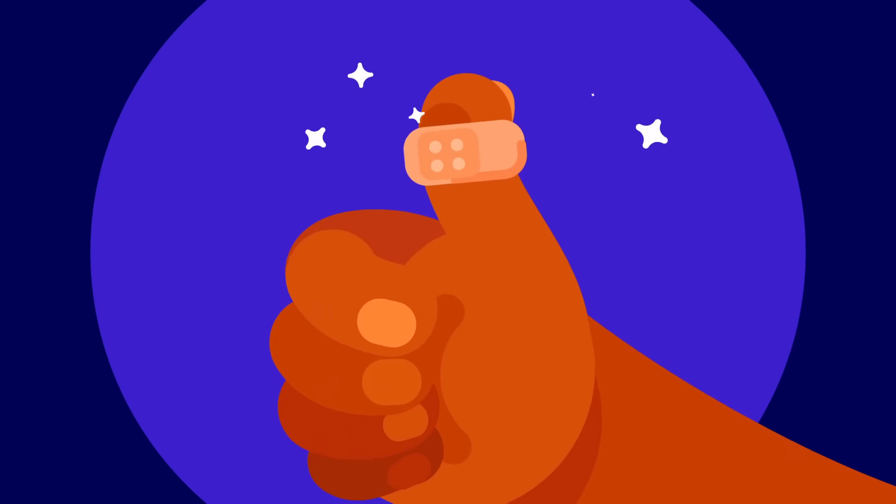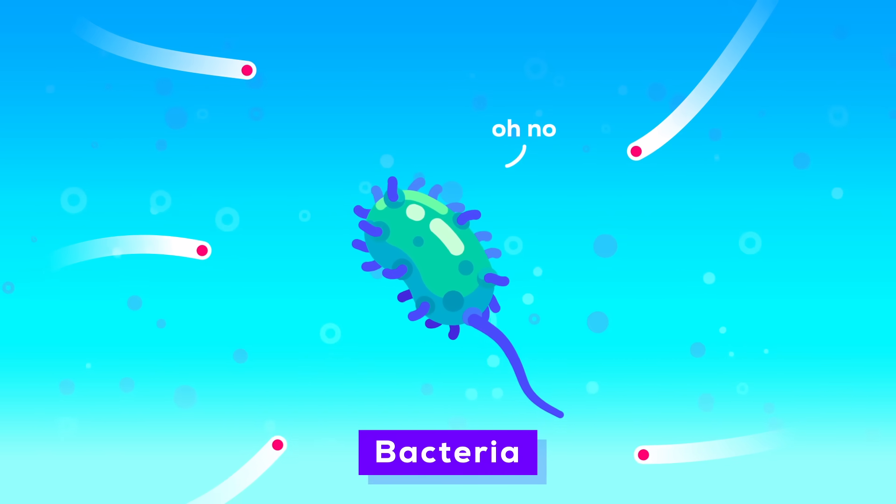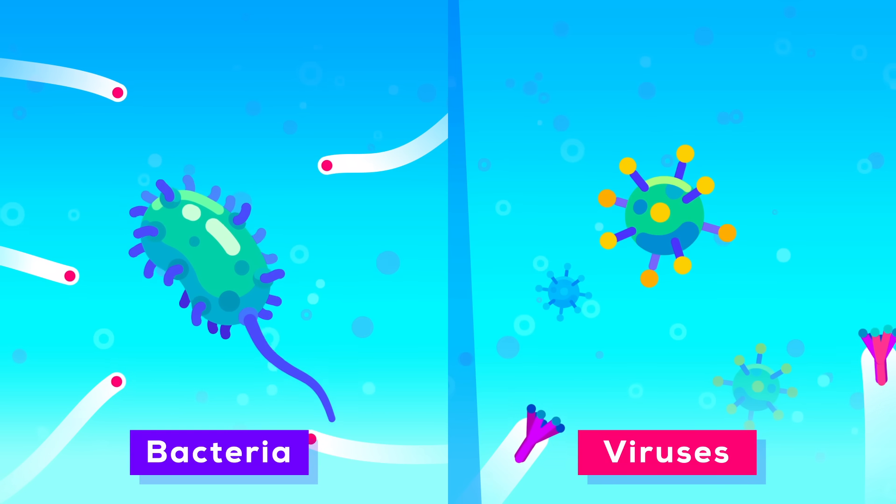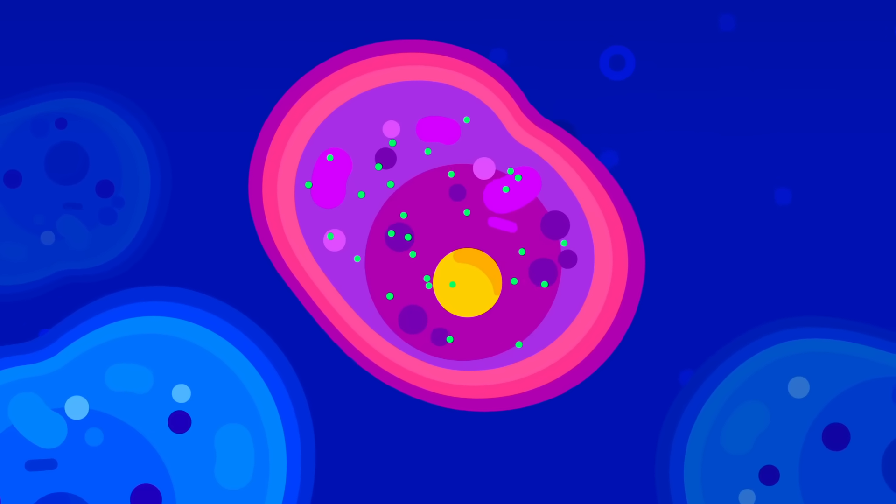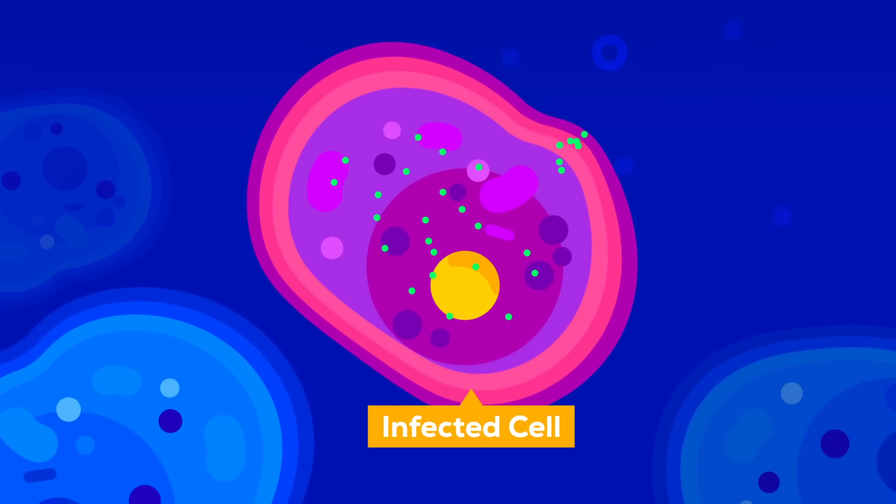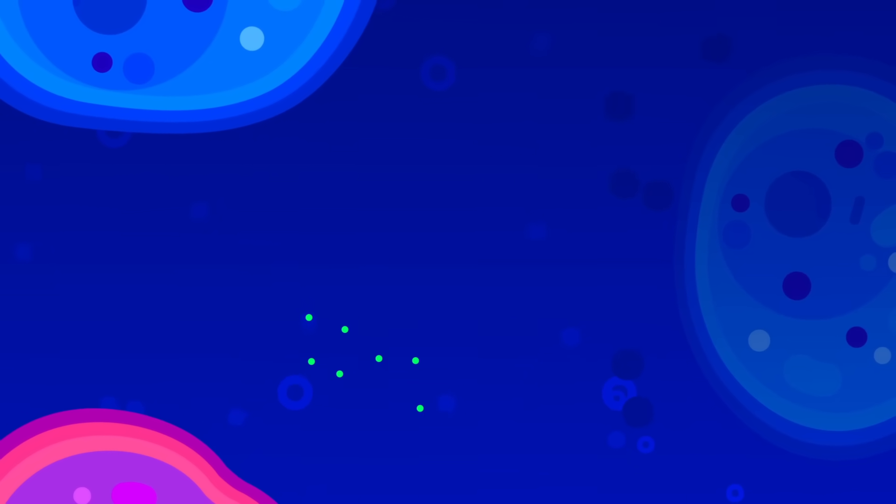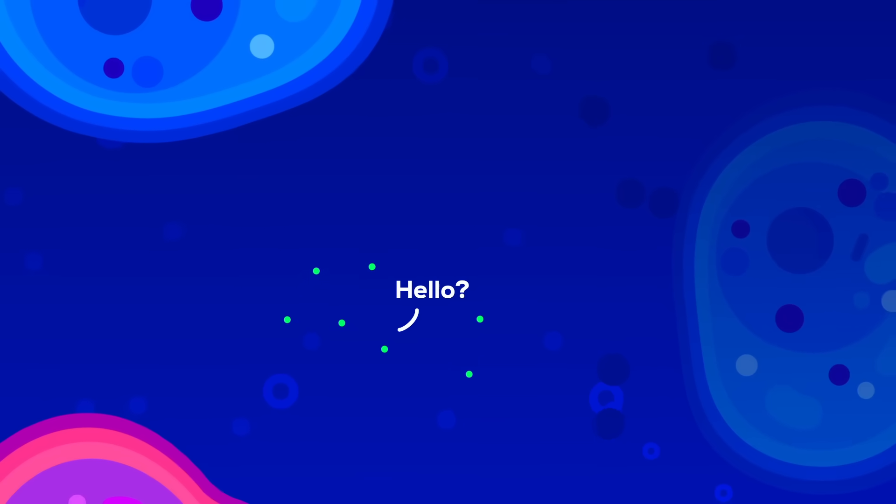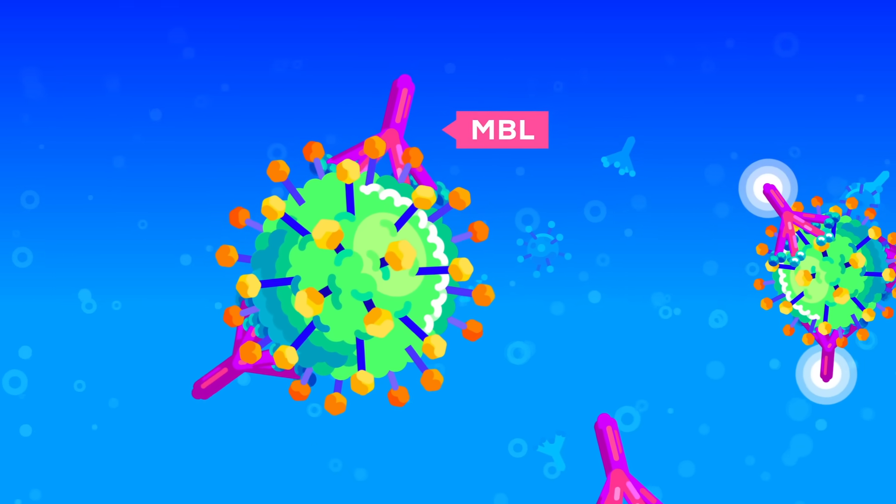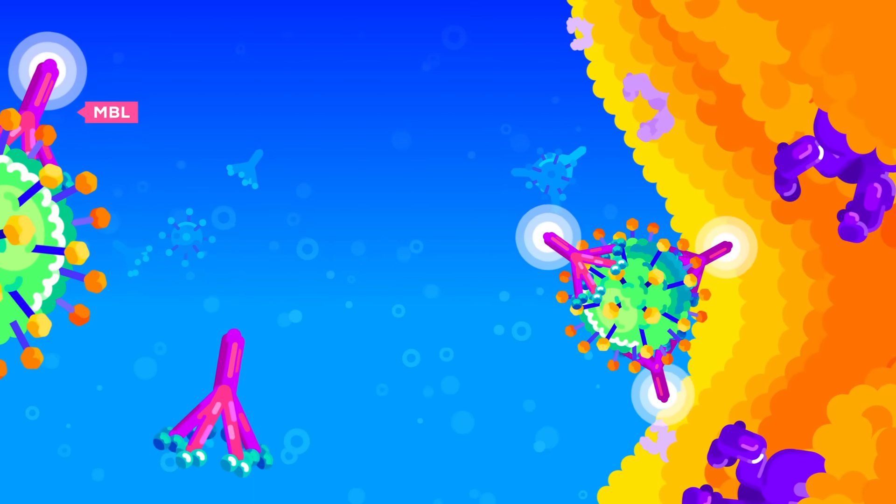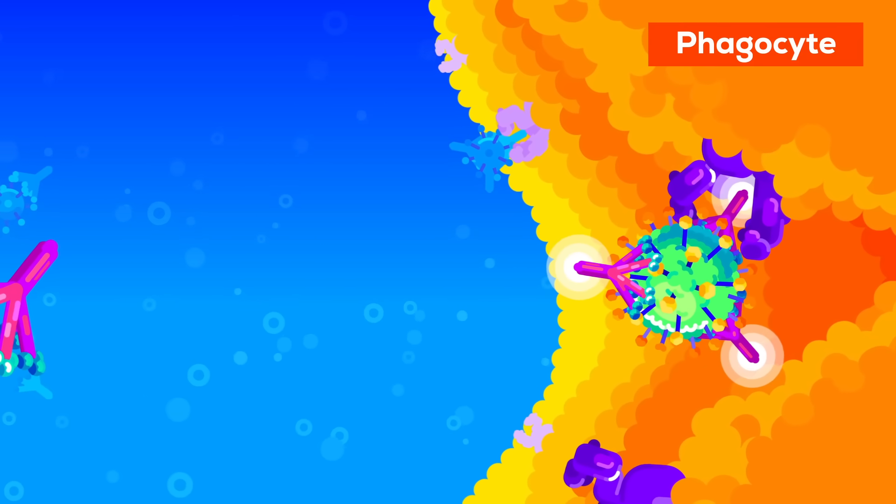But while bacteria are not happy about complement, the enemies it might be the most useful against are actually viruses. Viruses have one problem. They need to travel from cell to cell. Outside of cells, they're basically hoping to randomly bump against a cell to infect by pure chance. Here, they're completely defenseless. And here, complement is able to intercept and cripple them so they become harmless and guide the immune system to devour them.